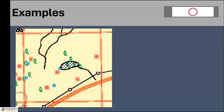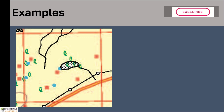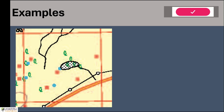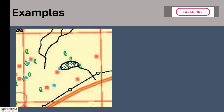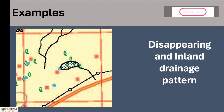Here we have two different drainage patterns within one grid square. When you get two or more drainage patterns in a grid square, you are supposed to write the name of both patterns. The one on the top left side is a disappearing stream — starting from the north and flowing south, disappearing there. The other one is an inland drainage pattern, with the stream starting from the southeast and flowing into the lake. So you write both: disappearing and inland drainage pattern.